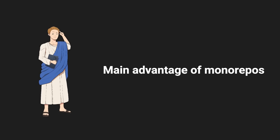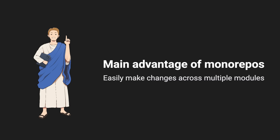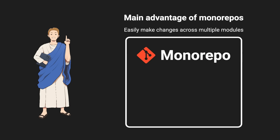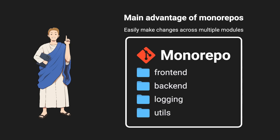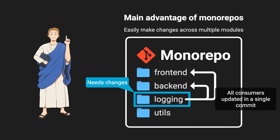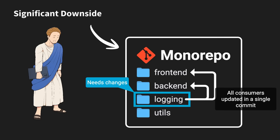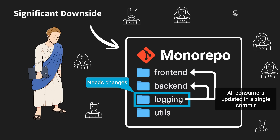If you had asked me earlier in my career what the main advantage of a monorepo is, I would have given you a clear answer: I can easily make changes across multiple modules in a single commit. For example, I could store the code for my frontend, backend, and some internal libraries all in the same repo. But this also comes with a really significant downside that is often overlooked, since it only reveals itself gradually as your repo and team grows.